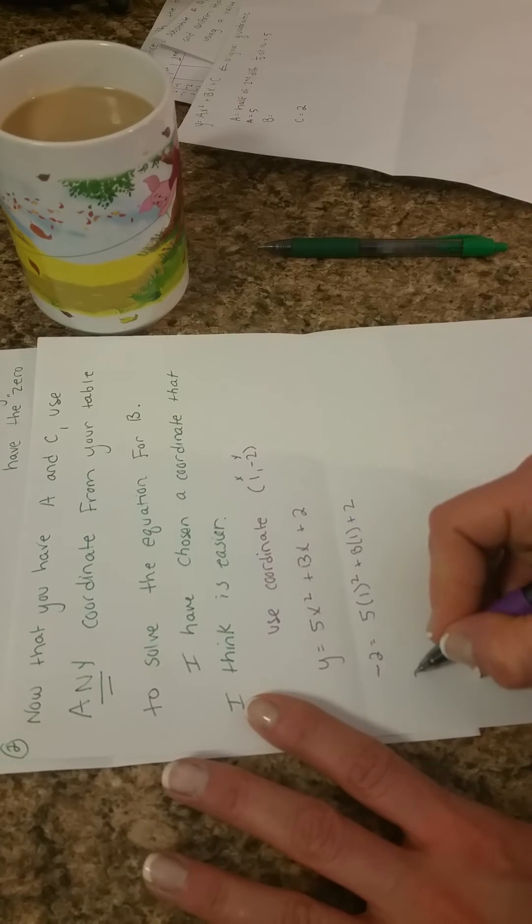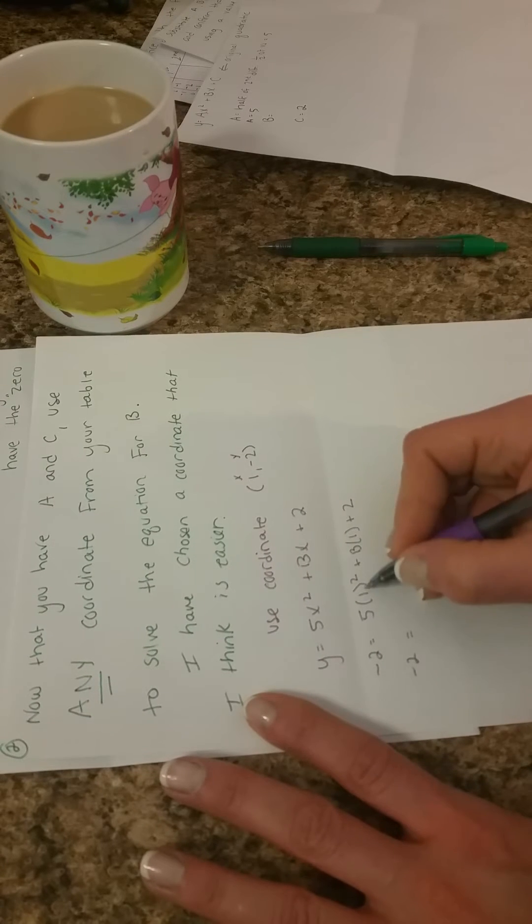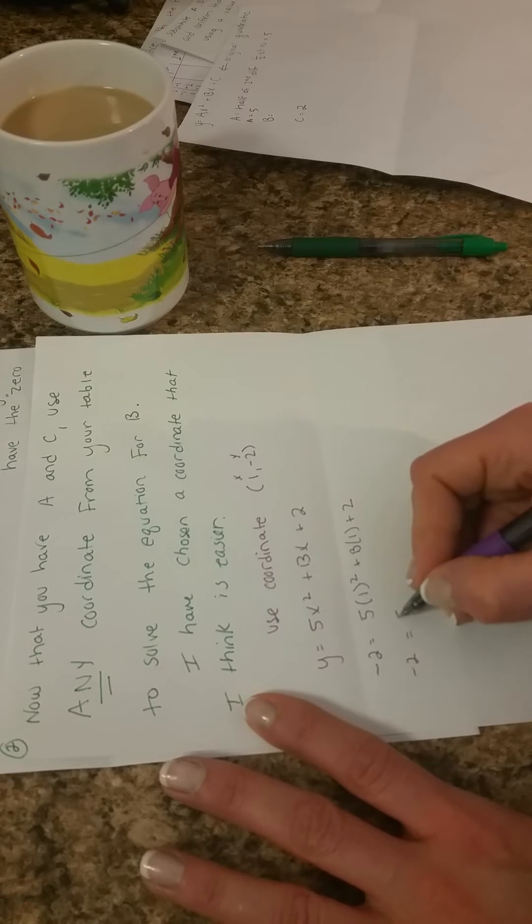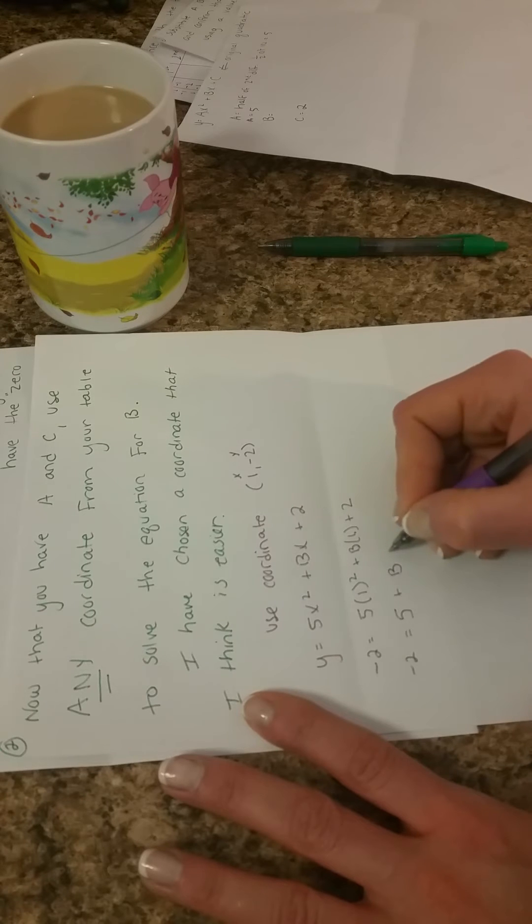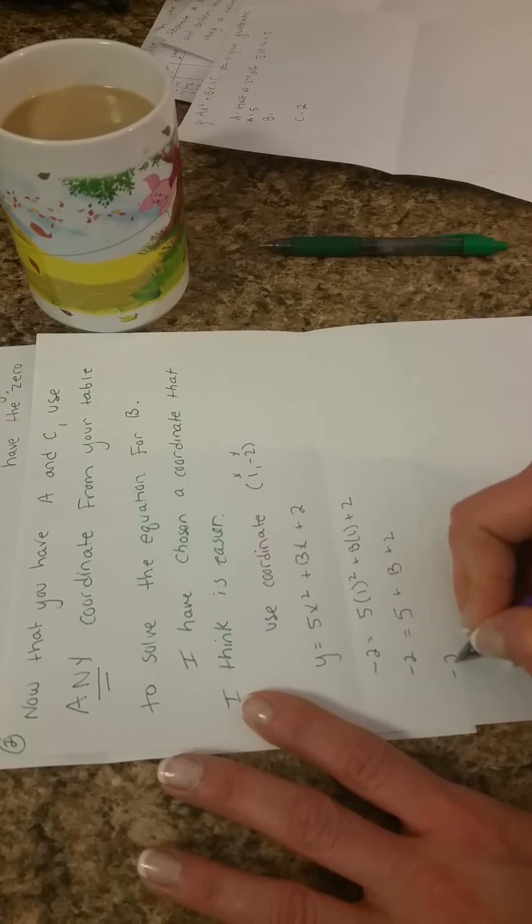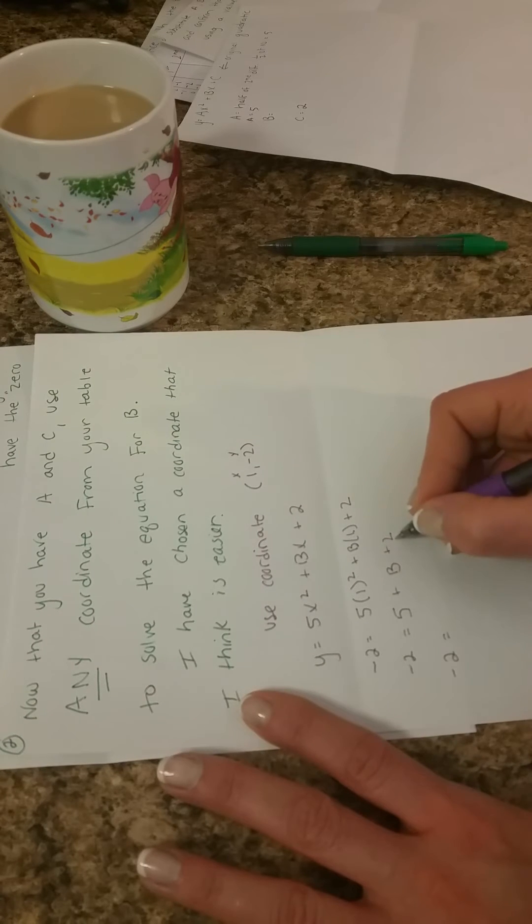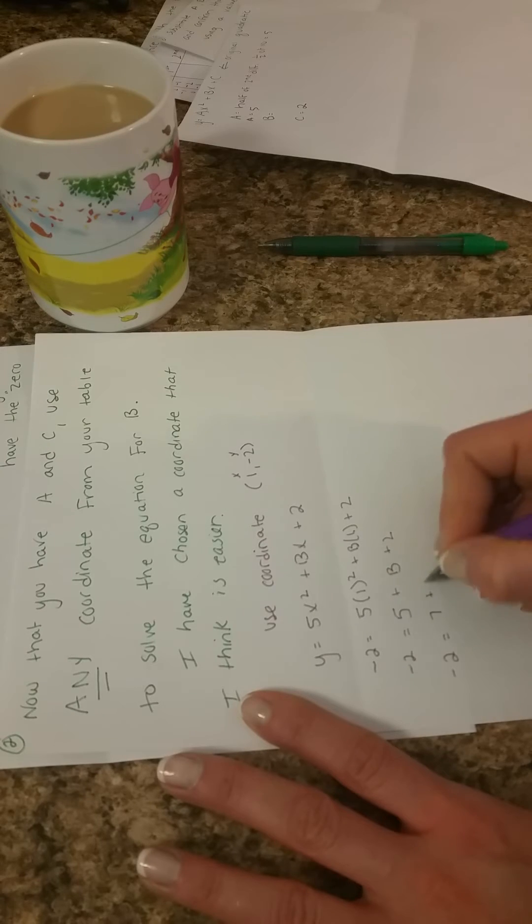Simplify first. Negative 2 equals 1 squared is 1, so that's just 5, plus, and then B times 1 is just B, so we can just write that, plus 2. So negative 2 equals 5 plus 2 is 7, plus B.